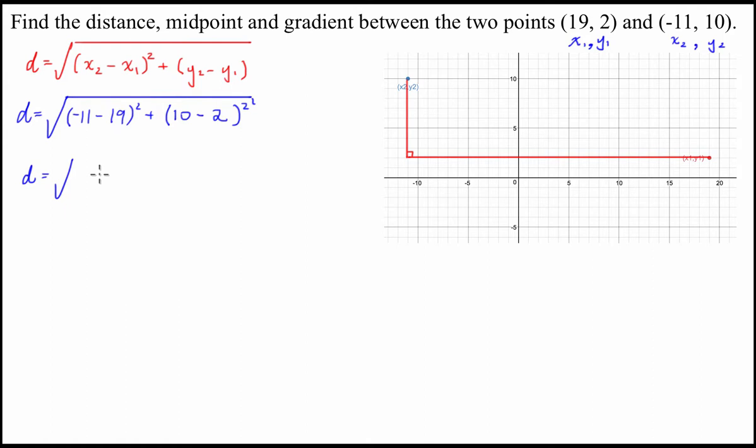So, then you just go about working out what all the numbers are. We have -11 take 19 is -30, squared is 900, plus 10 take 2 is 8, squared is 64. And we square root all of that, and we find that the square root of 964 is approximately, it's not exactly equal to anything, but it's approximately equal to 31.05 units.